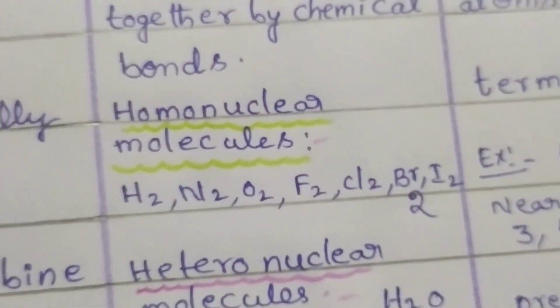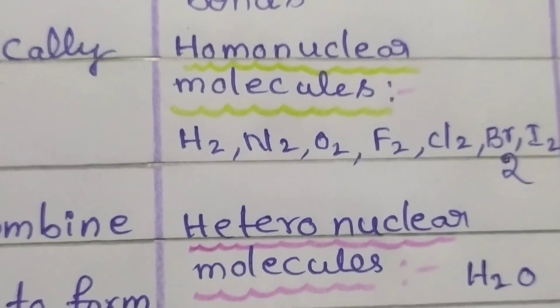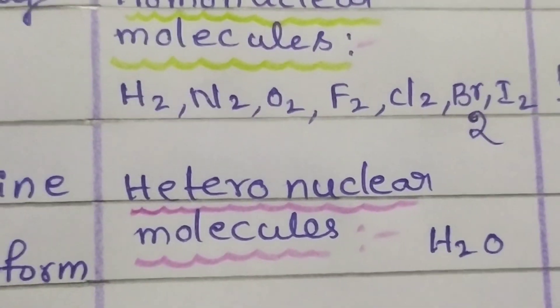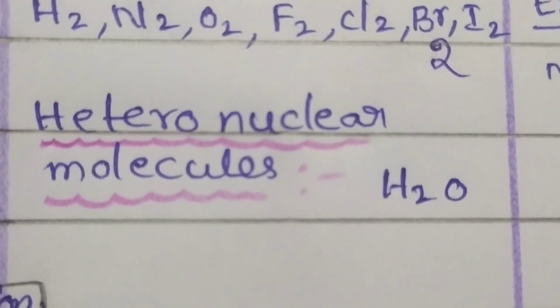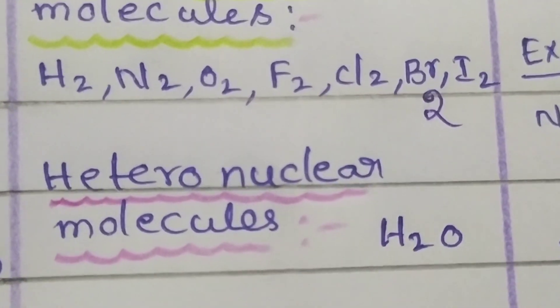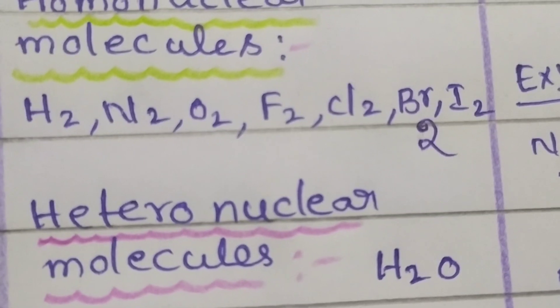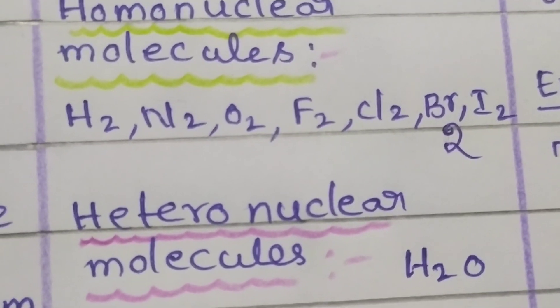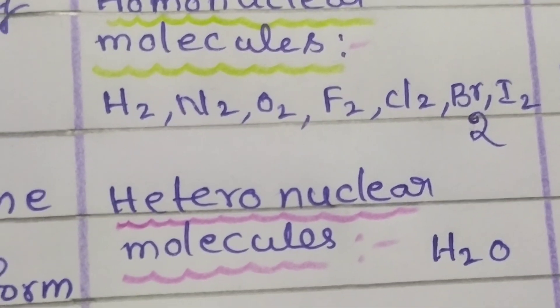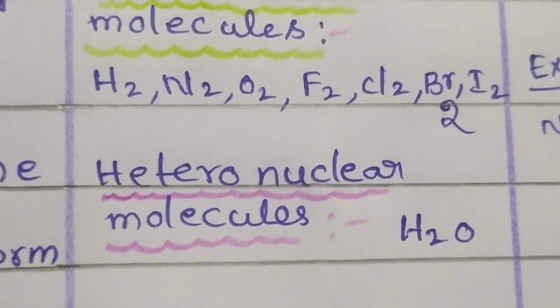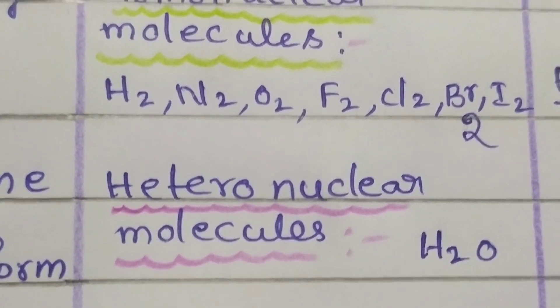Next, heteronuclear molecules - the molecules which are formed by the combination of different types of elements. For example, H2O. This H2O molecule is composed of three different types of atoms: two hydrogen atoms and one oxygen atom. When one oxygen and two hydrogen elements are combined together to form a water molecule, this water molecule is an example for heteronuclear molecule.